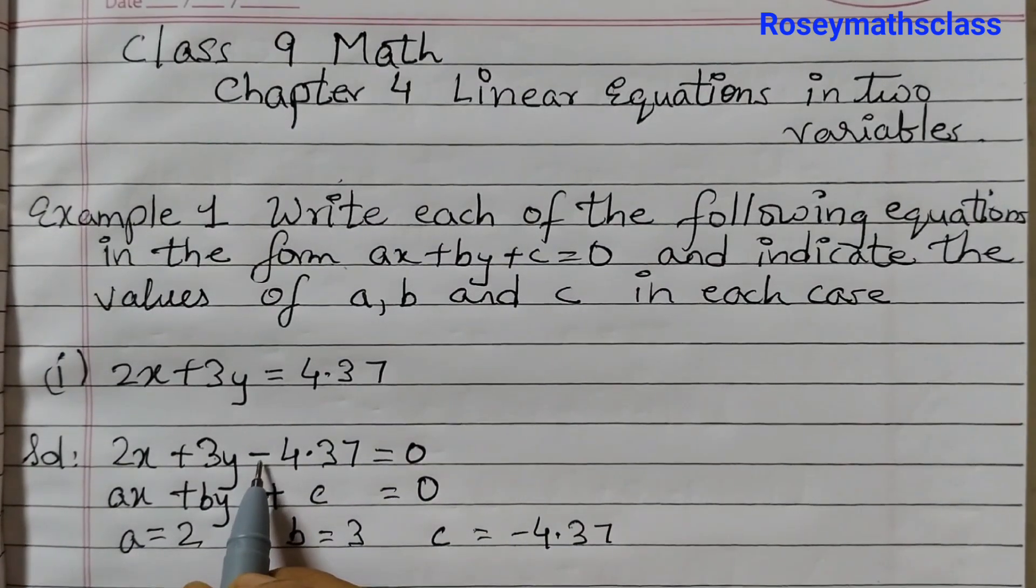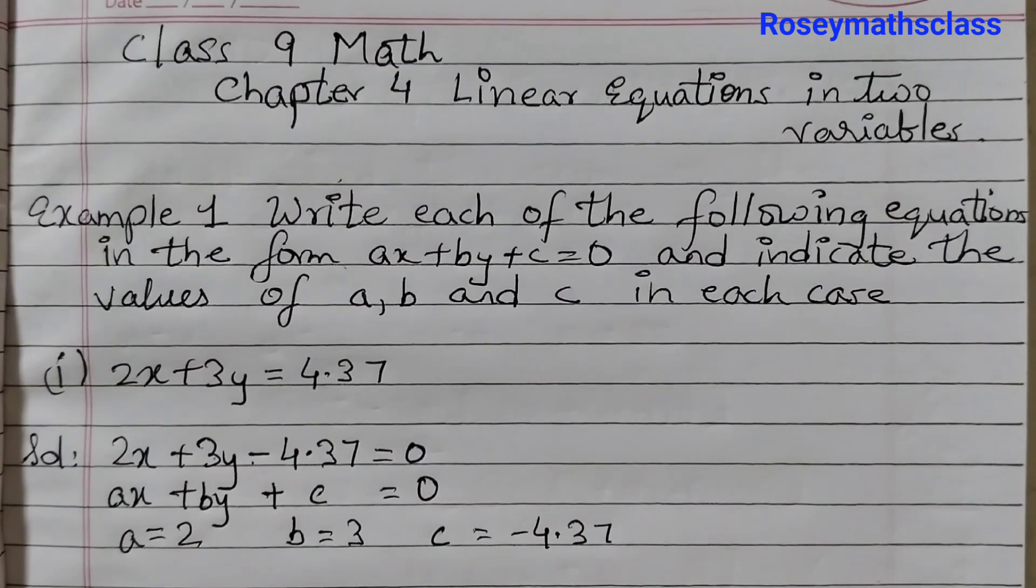Whenever there is a minus sign, you need to include that because this is plus c. So that means this is plus minus 4.37.